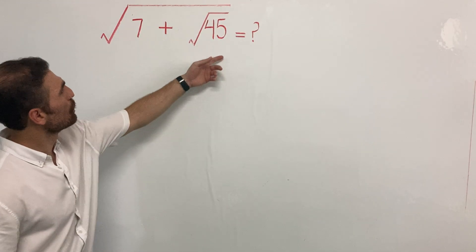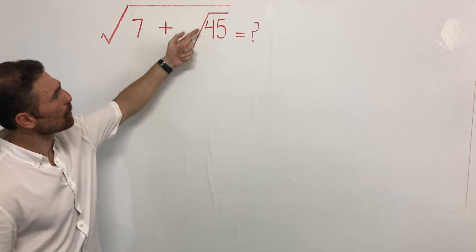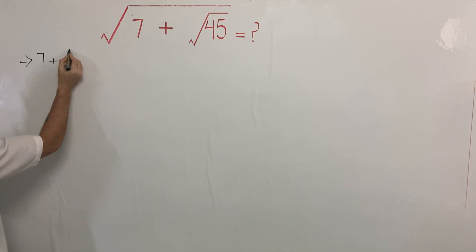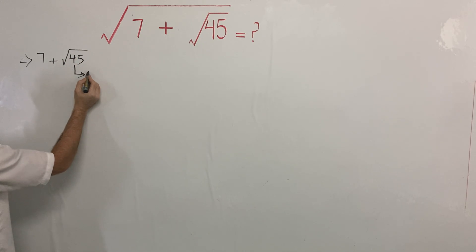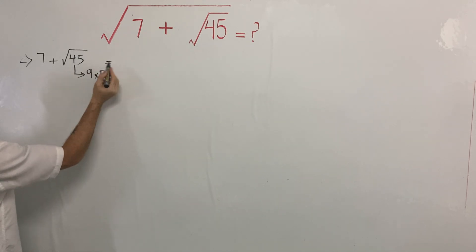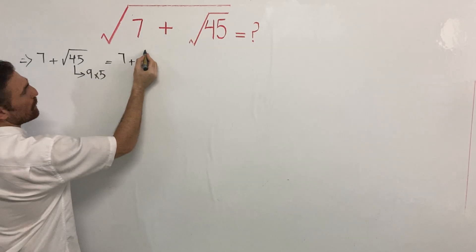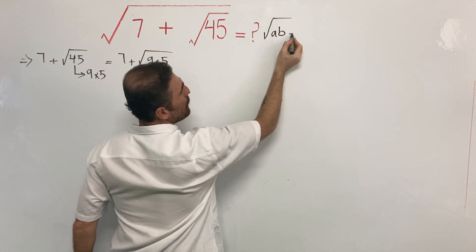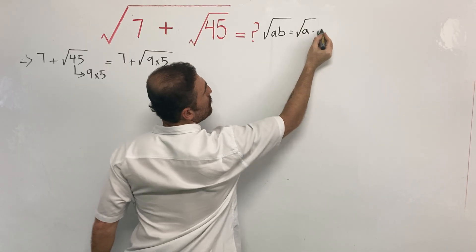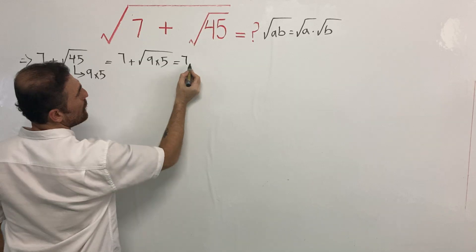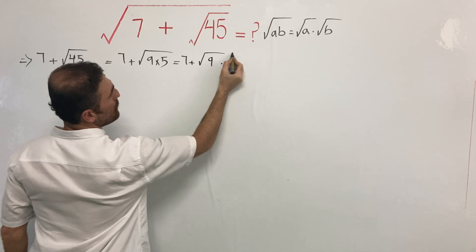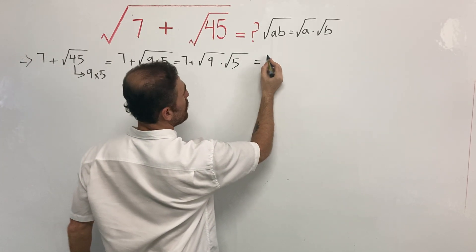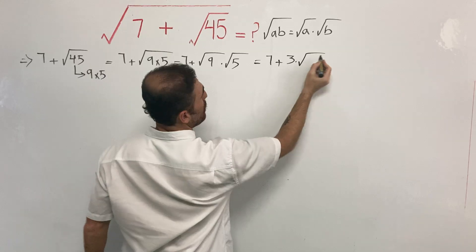To start this, I am going to work on the inner part, which means seven plus the square root of 45. So let me rewrite it: seven plus the square root of 45. Now, 45 can be written as a product of nine and five, so it is going to be seven plus the square root of nine times five. As you know, the square root of a times b can be written as the square root of a times the square root of b. So it is going to be seven plus the square root of nine times the square root of five. The square root of nine is three, so we have seven plus three times the square root of five.